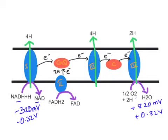Any molecule with a low redox potential has a lower affinity for electrons, meaning it readily donates electrons — it has a high tendency to donate electrons. NADH+H+ has a higher tendency to donate electrons compared to oxygen. Oxygen has a high redox potential of +820 millivolts, meaning it has a higher affinity for electrons and therefore a higher tendency to accept electrons.